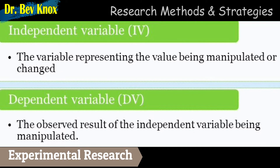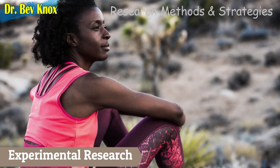The independent variable is the condition that is manipulated by the experimenter. You can think of the independent variable as being independent of the actions of those taking part in an experiment. Crucial to every experiment is the dependent variable — it is the variable that is measured and is expected to change as a result of changes caused by the experimenter's manipulation of the independent variable. The dependent variable is dependent on the actions of the participants, the people taking part in the experiment.